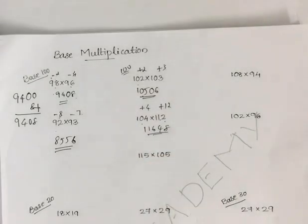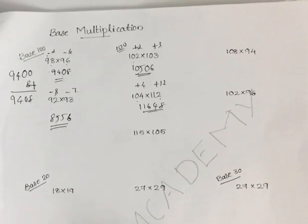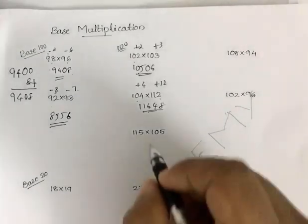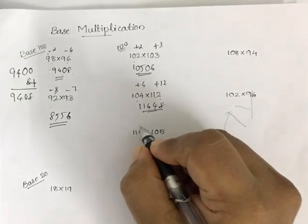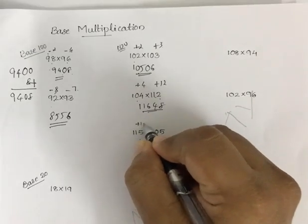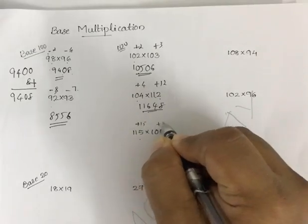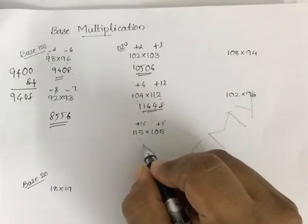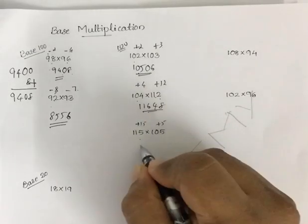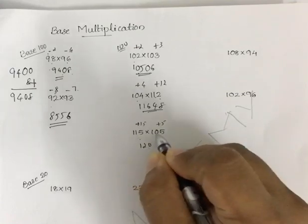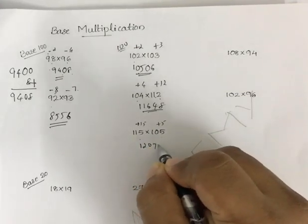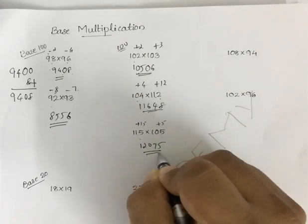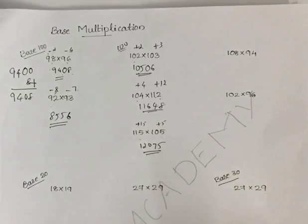The next example is 115 into 105. It is plus 15 and plus 5. Add one way: 115 plus 5 is 120. Then 15 times 5 is 75. So your answer is 12075.